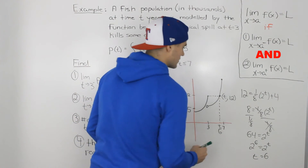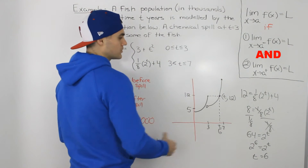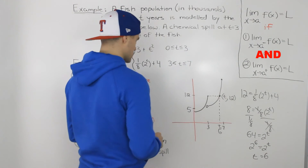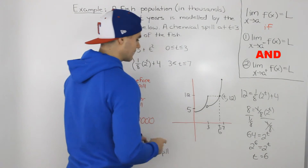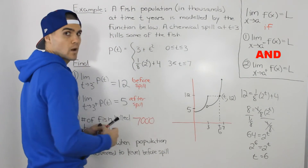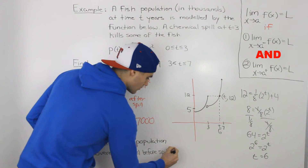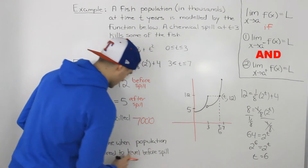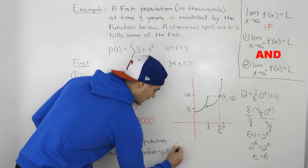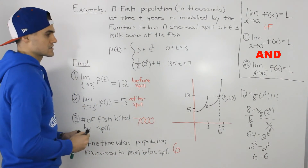So at 6 years, the population returns to the pre-spill level of 12,000. The answer to the fourth question is t equals 6.